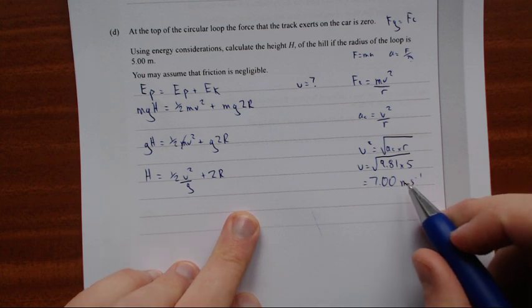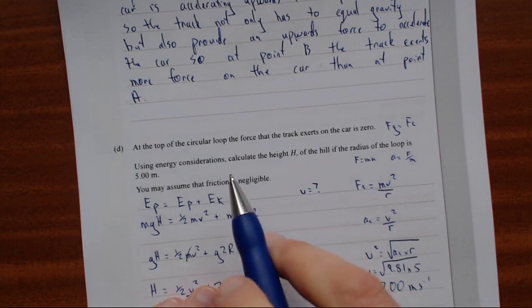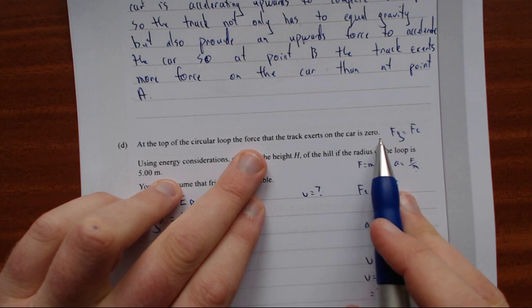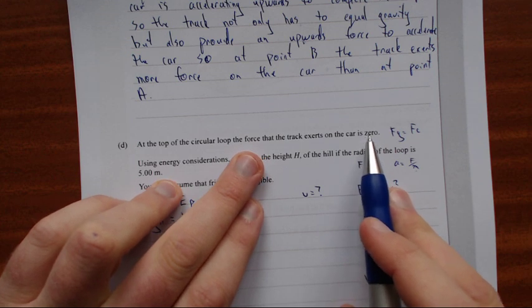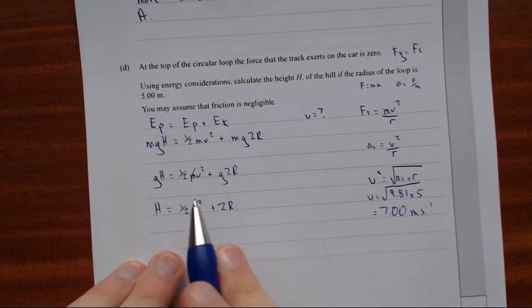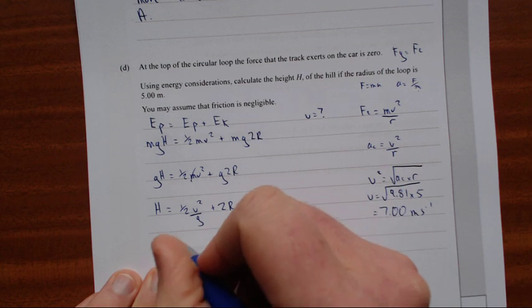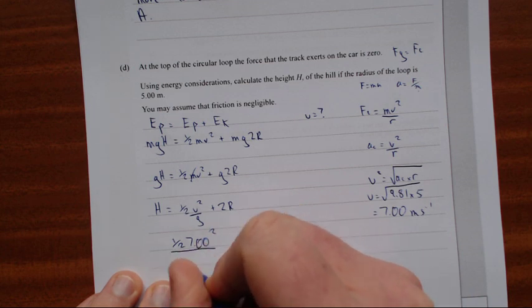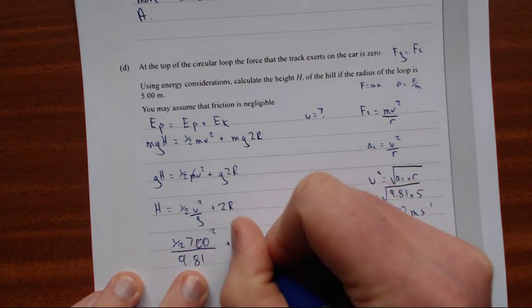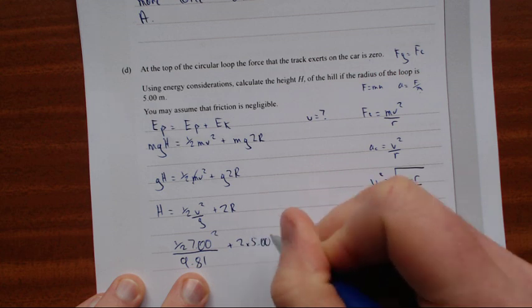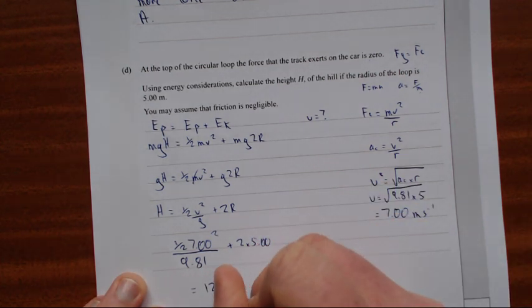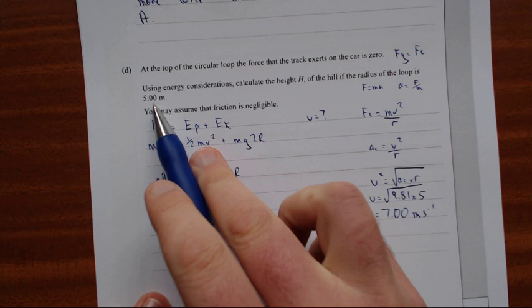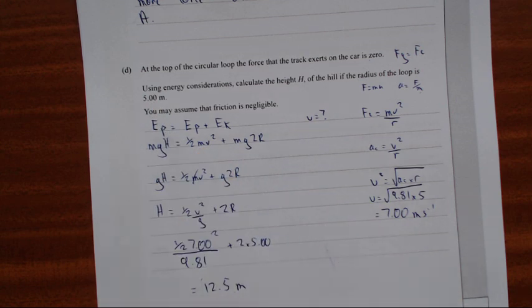So that is the velocity, well that's the minimum velocity it has to go in order to not fall off the loop. Any faster and it's going to have more kinetic energy than it really needs. But the trick is it says the force the track exerts on the car at the top of the loop is zero. So that's how you know that it's just the acceleration. Now that we've got the velocity, we've got everything we need to know. So all we do is just substitute in: half 7.00 squared over 9.81, remembering to use 3SF, plus 2 times 5.00, that equals 12.5 meters. Making sure to have it in 3SF. Everything's given to you in 3SF, so your answer has to be in 3SF. And that is the answer.